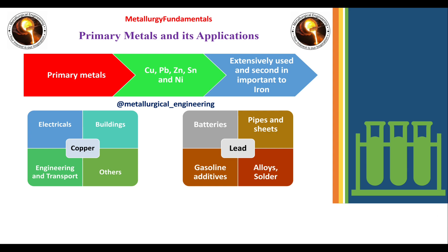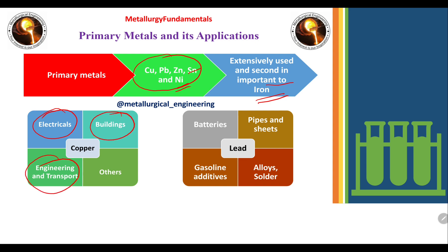First we will see about primary metals and their applications. The primary metals are Cu, Pb, Zn, Sn, and Ni. These are the most common five primary metals, which are extensively used and second in importance to iron. The first one is copper, whose applications include the electrical field, buildings, engineering and transport, and many other fields.